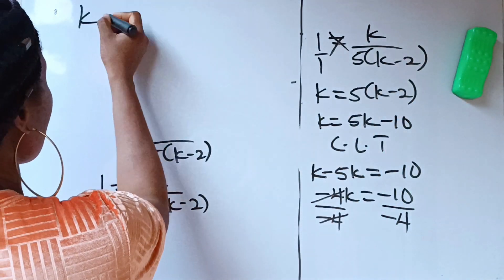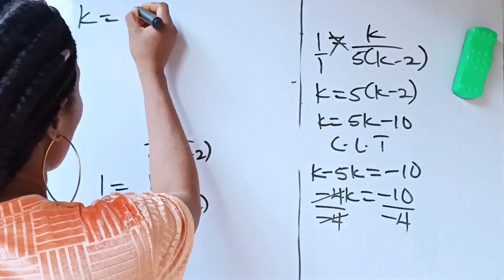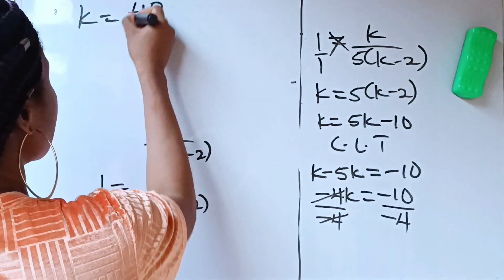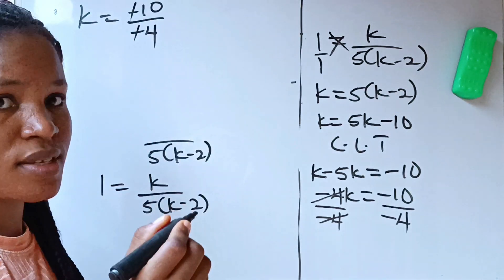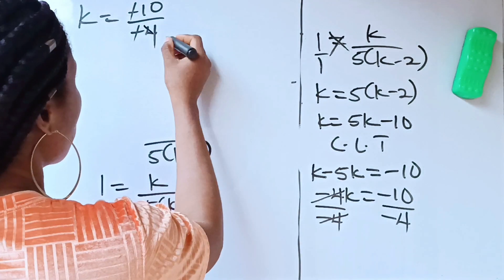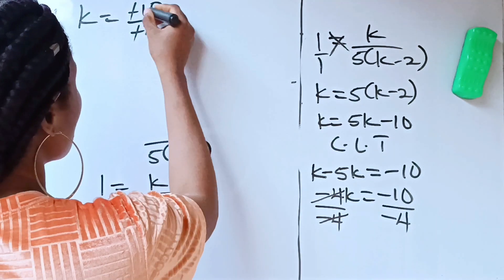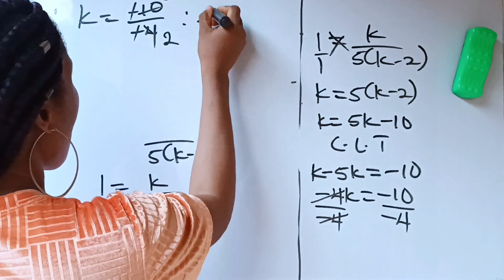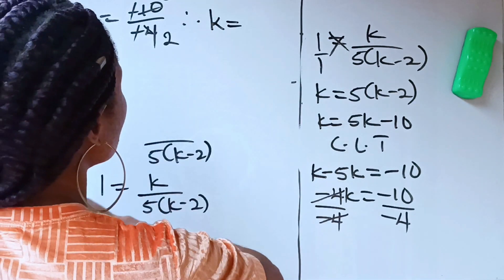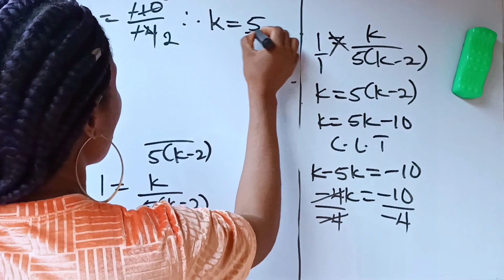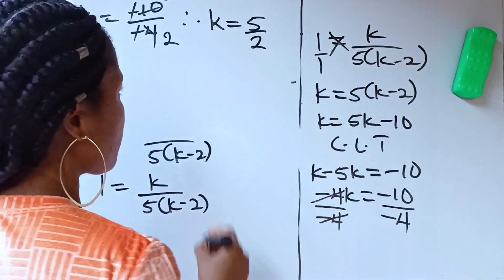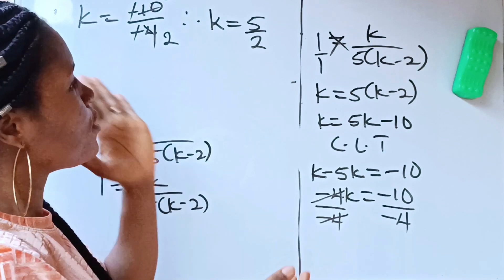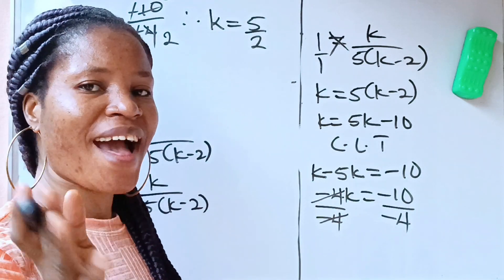We are left with k equals minus 10 over minus 4. The negatives cancel. Dividing: 10 divided by 4 simplifies — 2 goes into 4 twice and into 10 five times — therefore k equals 5 over 2. That is our final answer. Do have a lovely day, bye!